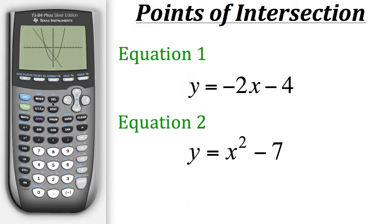Now the way that we could actually find those points is by using a feature in calc, which is this blue lettering above the trace button. So in order to get to it, we need to first hit the second button, and then hit trace. Now there's an option here that's called intersect. And we want to go to that one.